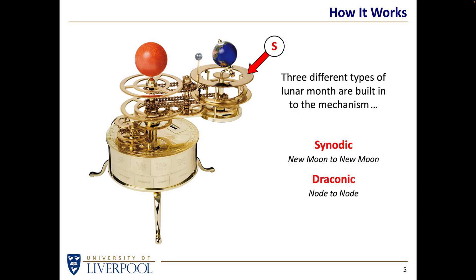The draconic month is not the same as the length of time it takes to go from one new Moon to the next. The draconic month is taken into account by the movement of this ring — you can just about see that it is actually inclined relative to the other rings by the five degrees that make sure the Moon sometimes goes above the plane of the ecliptic and sometimes below. That ring rotates at a speed which is slightly different from the synodic month. Finally, we need to take into account whether an eclipse is going to be annular or total, which depends on the elliptical nature of the Moon's orbit, and so there is a so-called anomalistic month — how long it takes the Moon to go from one perigee, one closest approach to the Earth, to the next perigee. That, again, is a different length of time.